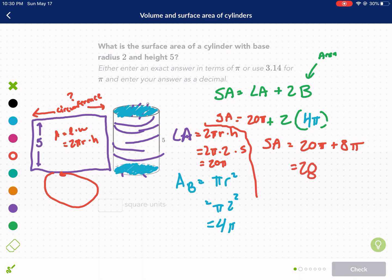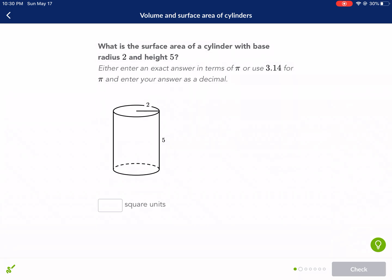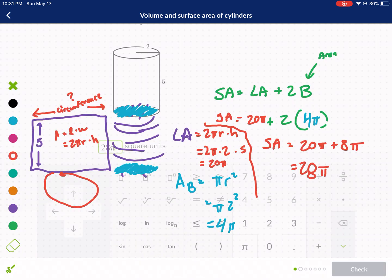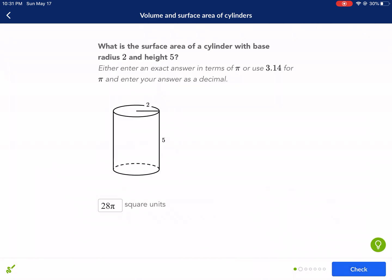So we get 28π square units. Notice how the units are squared and not cubed. Cubed is for when we have volume. 28π, check.